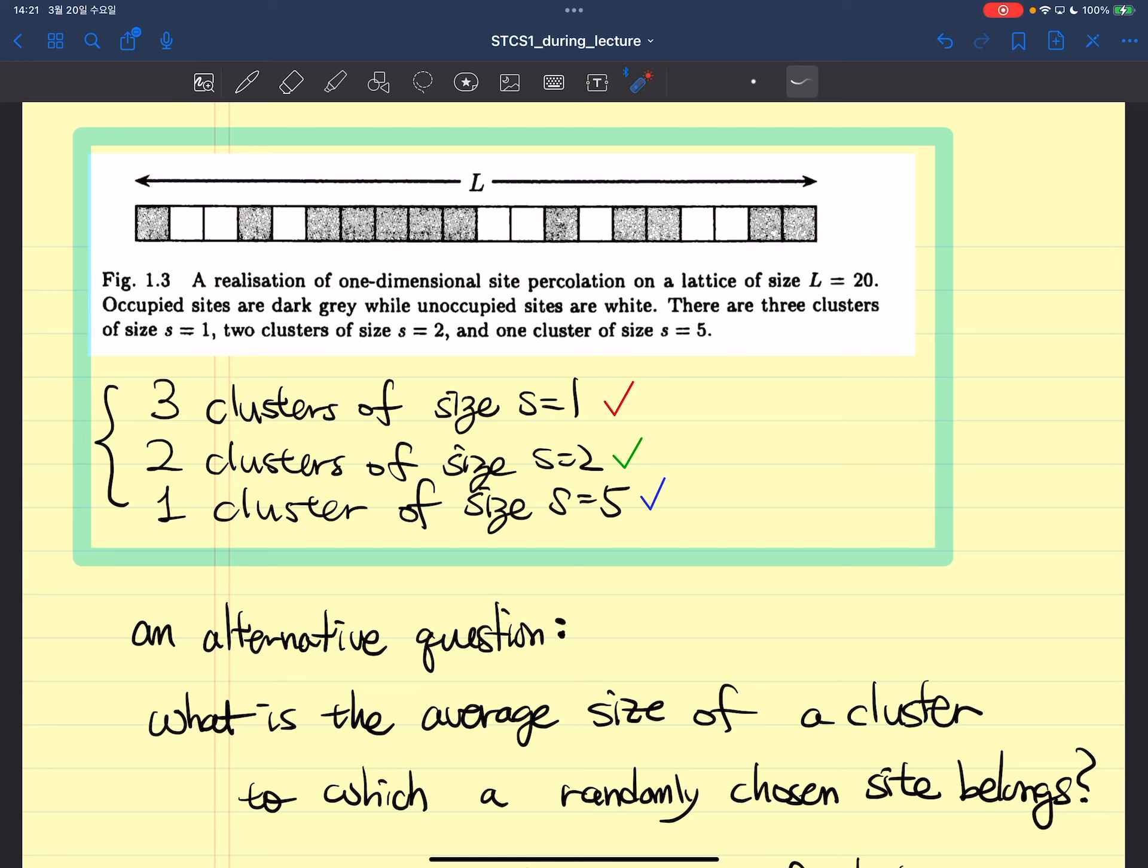If we compare these cases, since we have three size-one clusters and just one size-five cluster, you may reach the wrong conclusion that if we take a single site, the probability that each site belongs to the size-one cluster is three times the probability that a randomly chosen site belongs to the size-five cluster. But actually, this is just a very simple exercise, so you already know the answer is wrong.